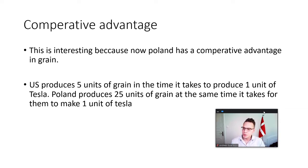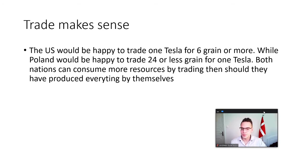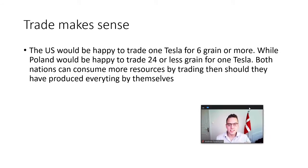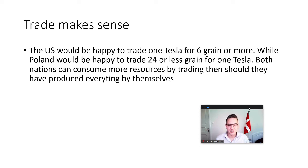Let's do some math. The US produces 5 units of grain in the time it takes to produce 1 unit of Tesla. For Poland, they produce 25 units of grain in the time it takes to produce 1 unit of Tesla. There is a clear window for international trade here. If we do some calculations, we can see that if the US trades 6 units of grain or more for a Tesla, they will be able to consume more than they can produce themselves — because it takes 5 hours to produce 1 Tesla and 1 hour to produce 1 unit of grain. If they can get 6 units of grain for 1 Tesla, they have gained an hour in labor productivity and can consume more than they themselves can produce.